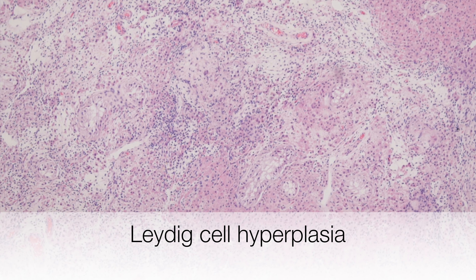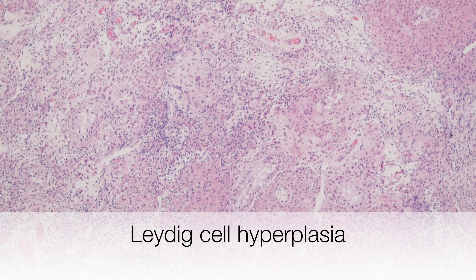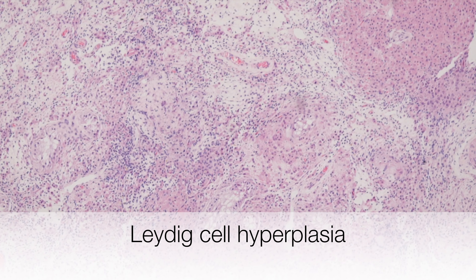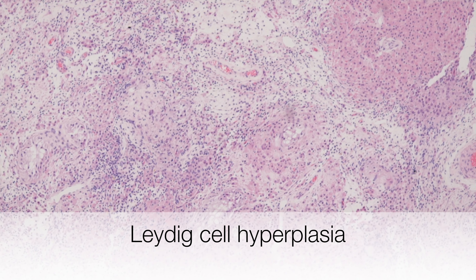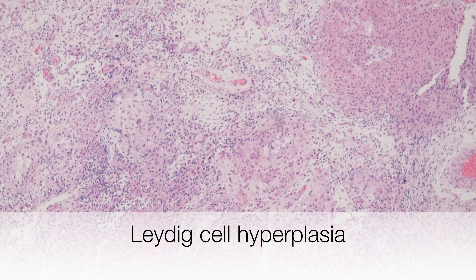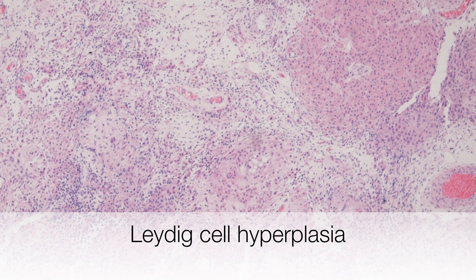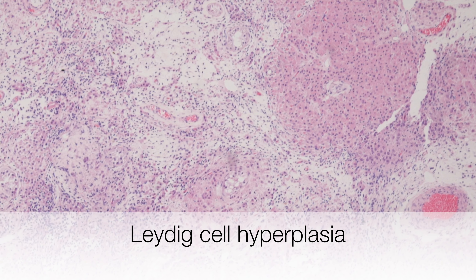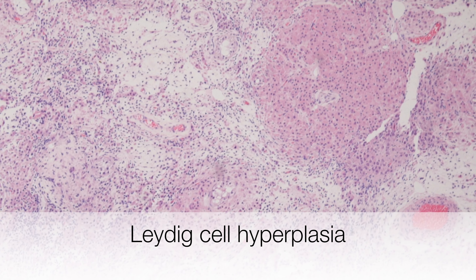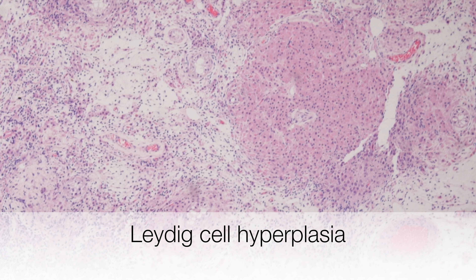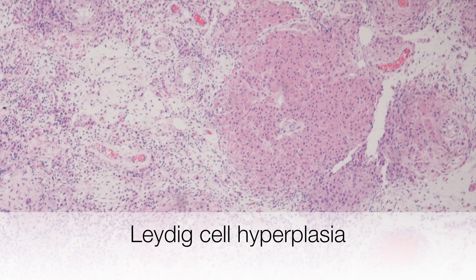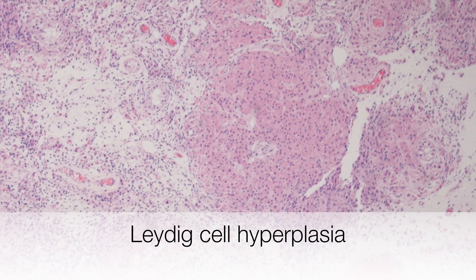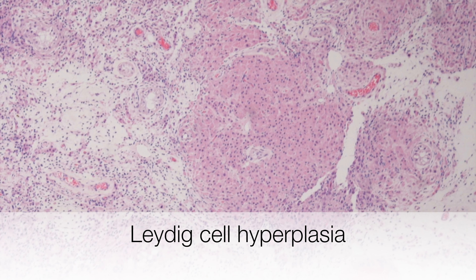The main differential diagnosis of a Leydig cell tumour is Leydig cell hyperplasia. Here is an example of Leydig cell hyperplasia. Leydig cell tumours have sharply circumscribed margins, but in this example of Leydig cell hyperplasia you can see rather ill-defined nodules of hyperplastic Leydig cells.